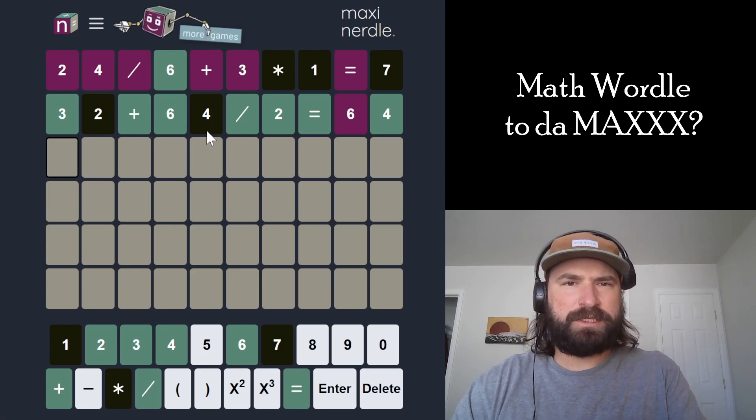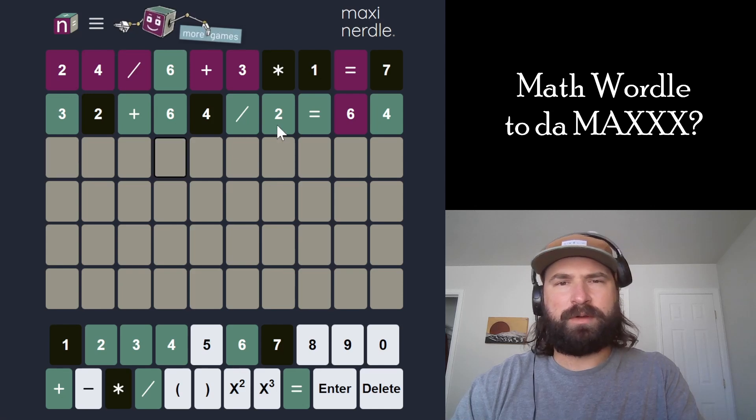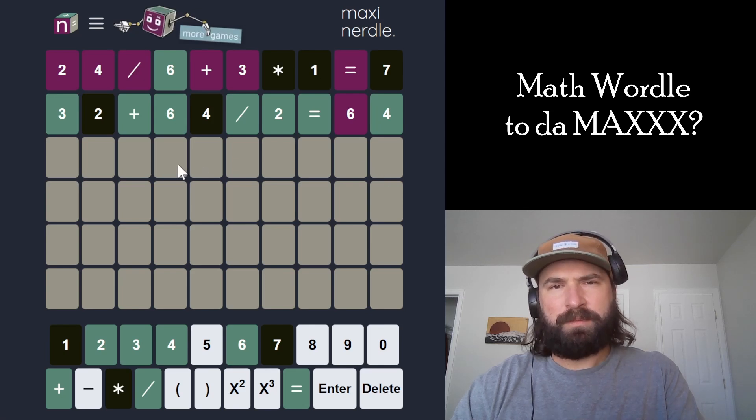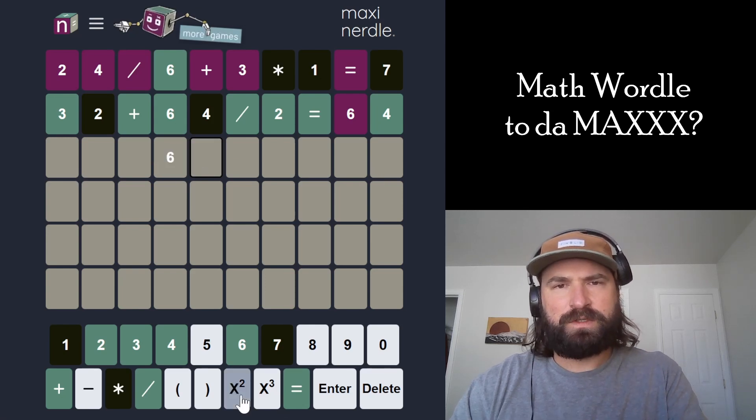Because if this is in the 30s, and then we're adding something in the 30s, this is either going to be in the 60s or the 70s. And that's not possible. So, oh, it could be 6 squared too. It could be 6 squared divided by 2. 36 divided by 2 would be 18. And then I would have something in the 40s. It could be in the 50s though. I'm going to try that, actually.